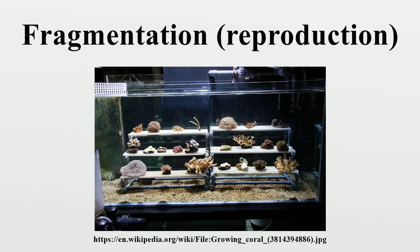People use fragmentation to artificially propagate many plants via division, layering, cuttings, grafting, micropropagation, and storage organs such as bulbs, corms, tubers, and rhizomes.